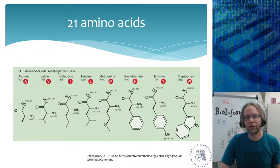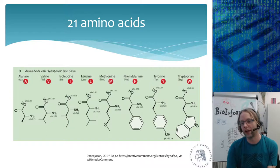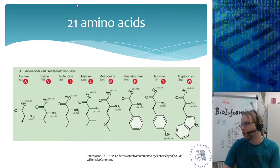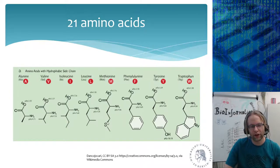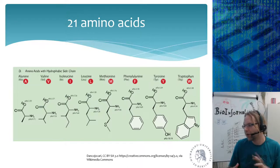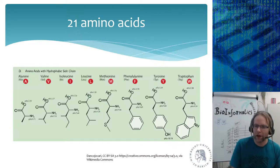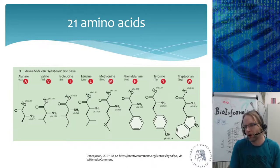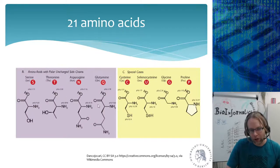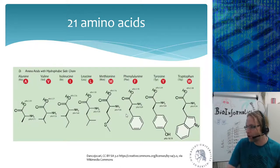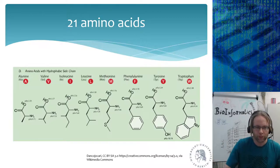Then there are the amino acids with hydrophobic side chains — these like being in the cell wall because they have carbon chains. Methionine is interesting because it also has a sulfur group. These amino acids don't like to be in water; they like to stick together and clump up. These are the hydrophobic ones, found on the inside of the protein or on the outside when a protein is embedded in the cell wall, which is made out of fat molecules.